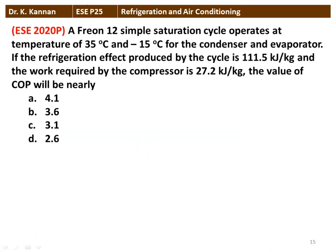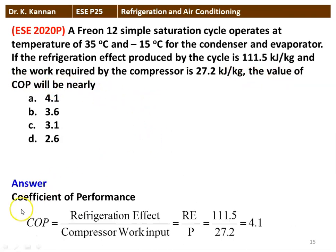The next question from the 2020 question paper: a simple saturation cycle operates at 35°C and -15°C for the condenser and evaporator. The refrigeration effect is 111.5 kJ/kg and the compressor work is 27.2 kJ/kg. The COP equals refrigeration effect divided by compressor work: 111.5 ÷ 27.2 = 4.1. The correct answer is COP 4.1. Note that while temperature data allows calculation of theoretical COP, actual COP uses refrigeration effect and compressor work input.